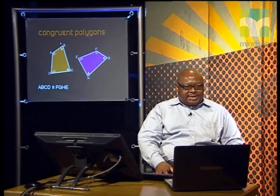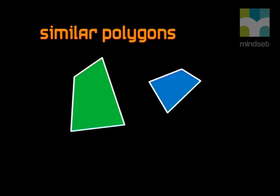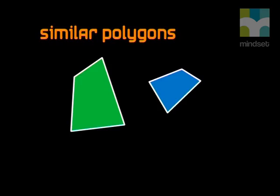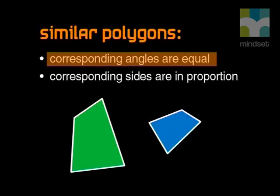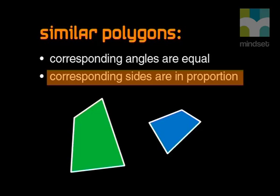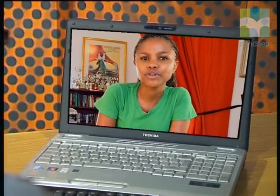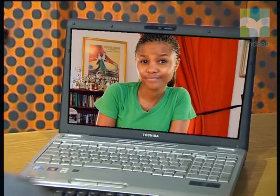Now that we have looked at congruency, I would like us to spend some time looking at similarity. Can you remember what similar polygons are? Not really. Two shapes are similar if their angles are the same size and their sides are in proportion. To put this more accurately, two shapes are similar if their corresponding angles are equal or congruent, and their corresponding sides are in proportion, but not necessarily equal to each other. The difference between congruency and similarity is that congruent shapes are identical in shape and size, while similar shapes have the same shape but differ in size. That's correct.